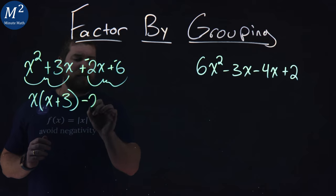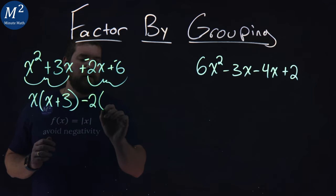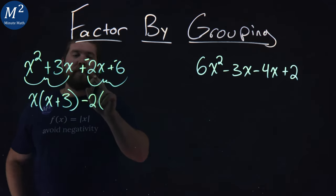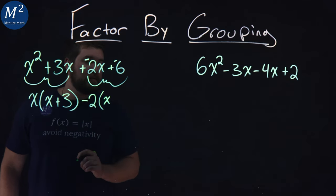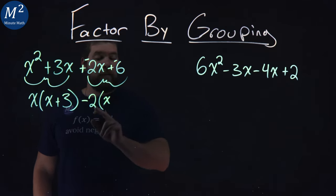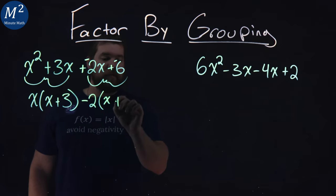So if I pull out a negative 2 here, what do we have left? Negative 2x divided by a negative 2 is a positive x. Negative 6 divided by a negative 2 is a positive 3.